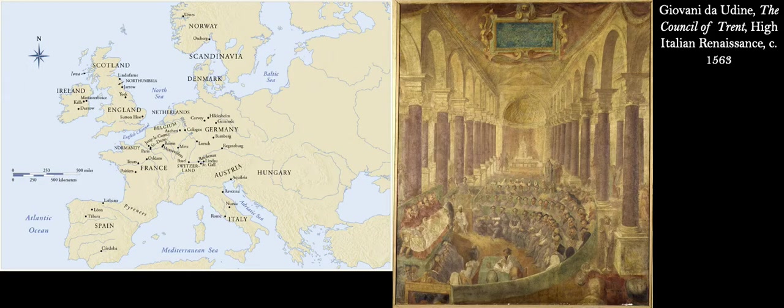The changes happen in different places for different reasons. In Germany, Luther was after theological changes. In England, it was more of a political change — Henry VIII was married to someone he didn't want to be married to, the Pope wouldn't let him get divorced, and eventually Henry VIII said he'd make a new church and be the head of the Church of England. In the United States it's called the Episcopalian Church, but it's the Anglican Church, centered in Canterbury.